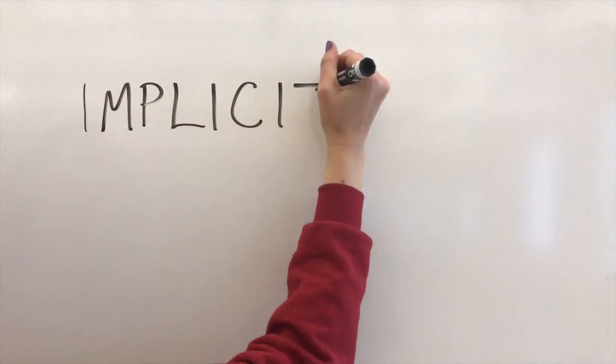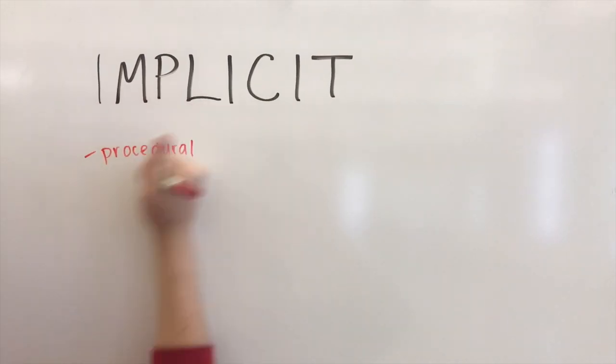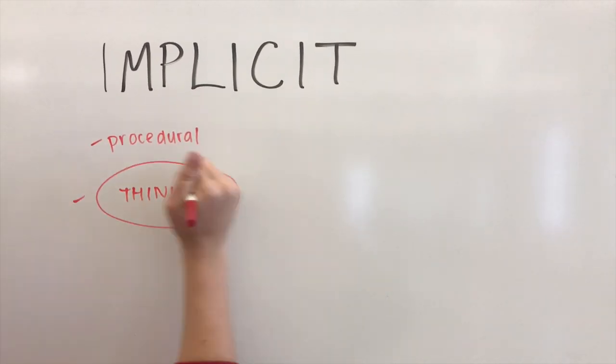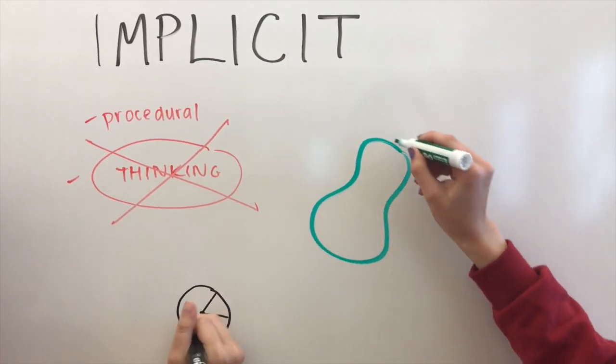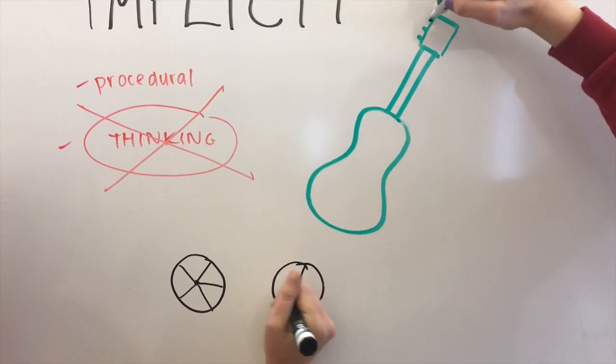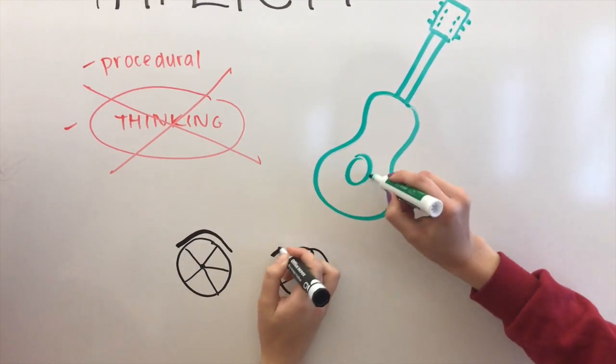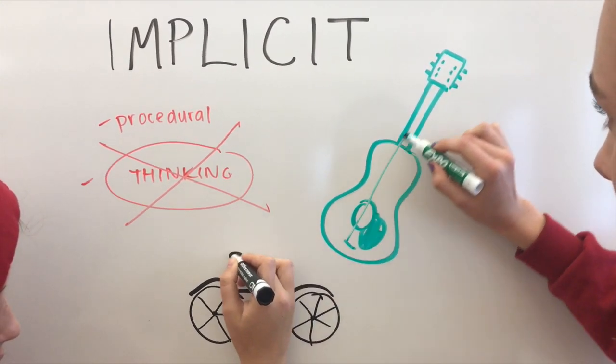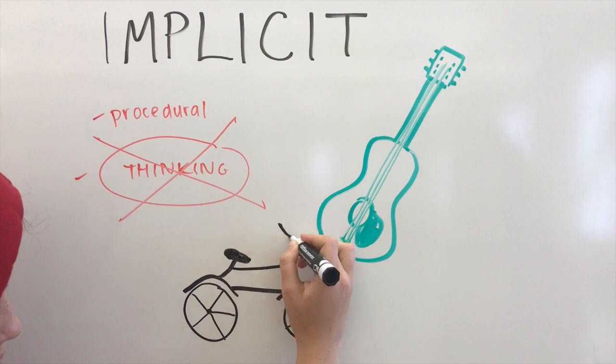Implicit memory is also known as procedural memory. We use it when we walk, play an instrument, or ride a bike. We are performing a task without consciously thinking about how to perform that task. It is our unconscious recollection of how to procedurally do activities.